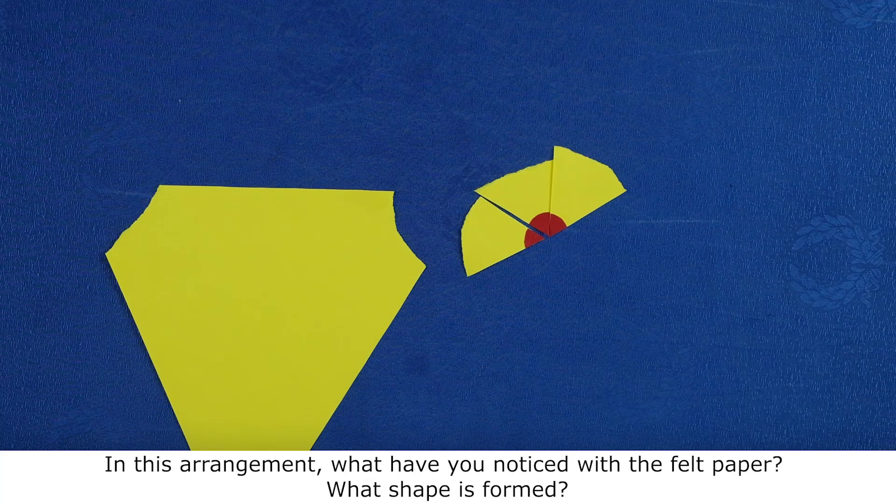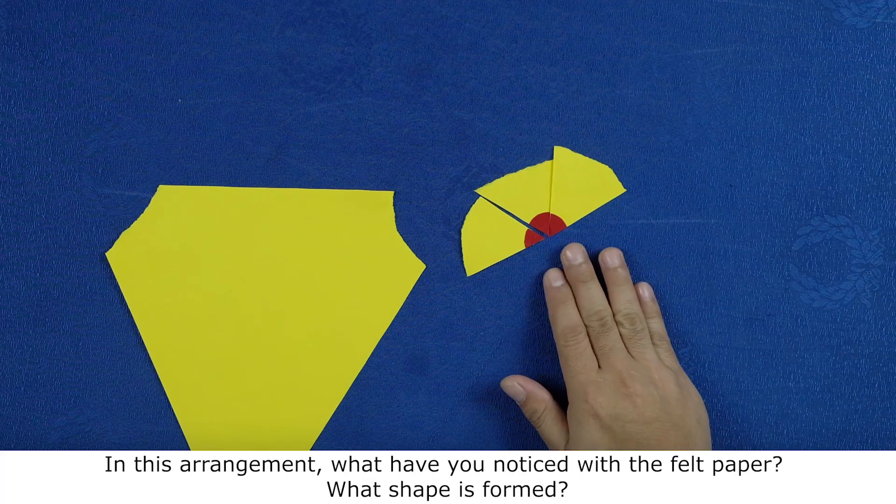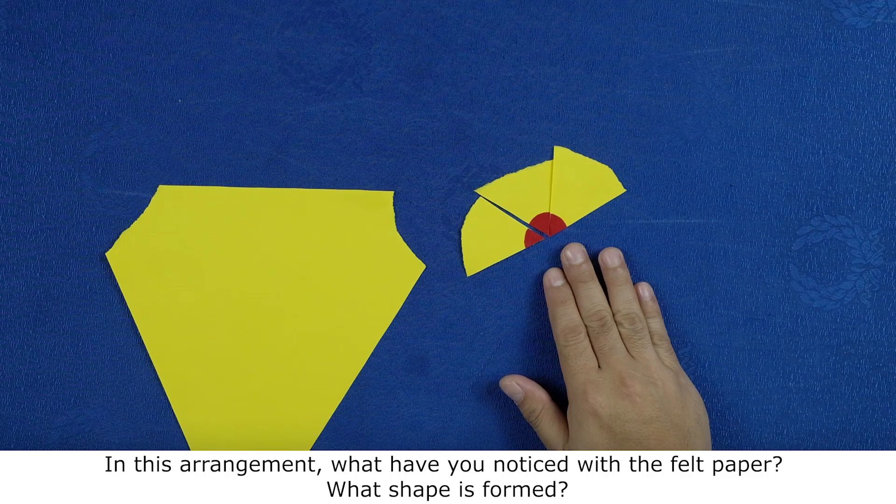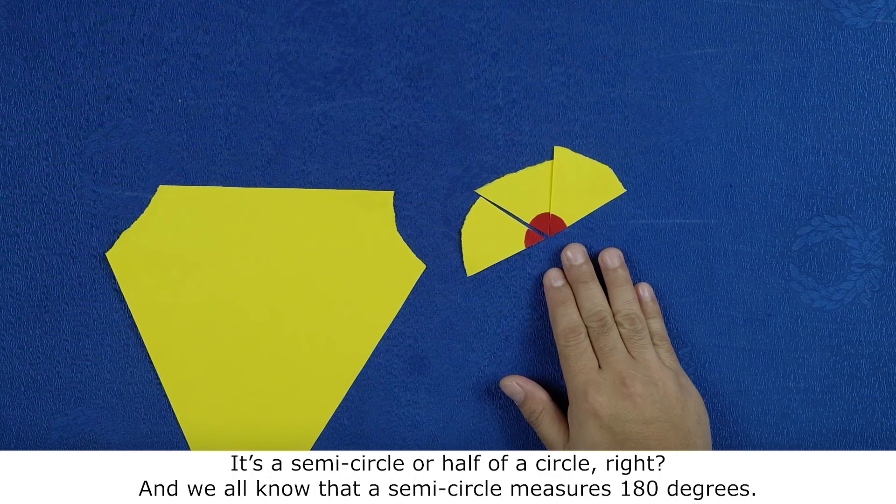In this arrangement, what have you noticed with the felt paper? What shape is formed? It's a semicircle or a half circle, right?